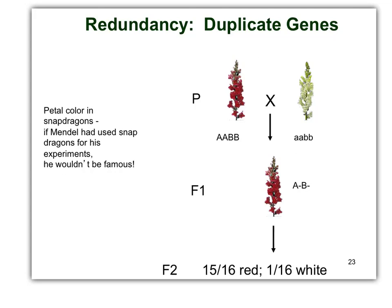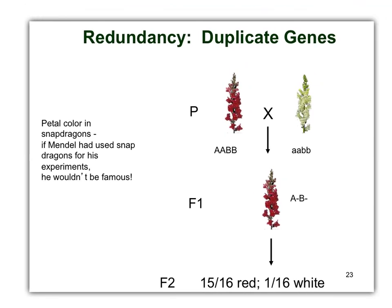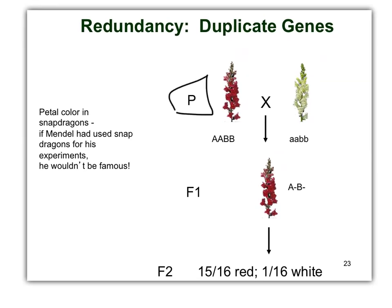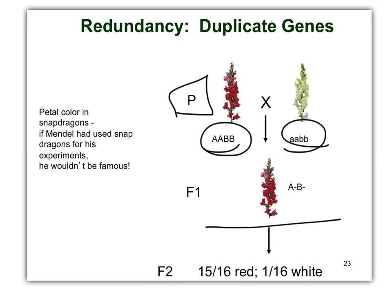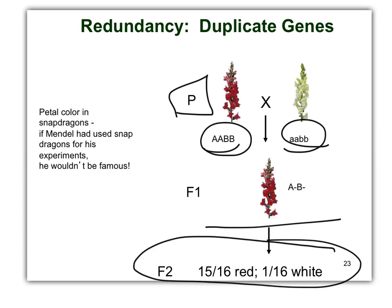Okay guys, it's the last lecture capture for tonight. Redundancy, or duplicate genes. In this case, our parental is going to be homozygous times homozygous, and the F1 would look just like a one-gene cross complete dominance. We need to look down to the F2. The ratio in the F2 is what's going to give you the clue. In this case, it's a 15 to 1 ratio.